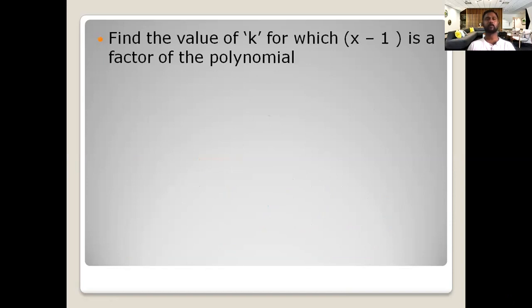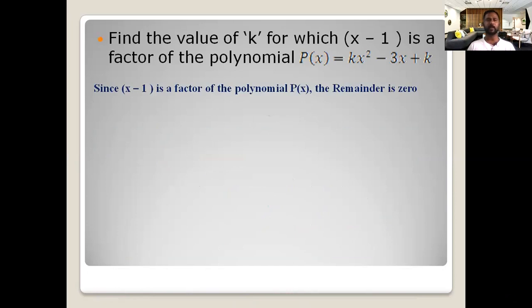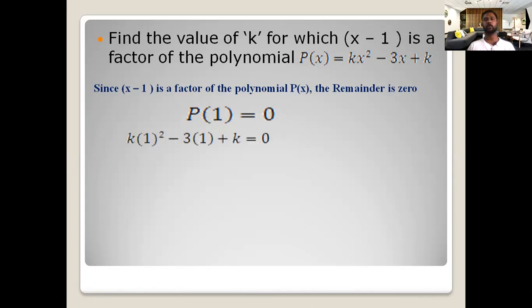Find the value of k for which x minus 1 is a factor of the polynomial p(x) equal to kx² minus 3x plus k. Since x minus 1 is a factor, the remainder should be 0. Equating x minus 1 to 0 gives x equal to 1, so p(1) equal to 0. Substituting: k(1)² minus 3(1) plus k equals 0, giving k minus 3 plus k equals 0, so 2k minus 3 equals 0, therefore k equal to 3/2.